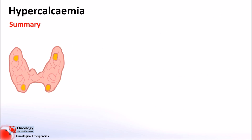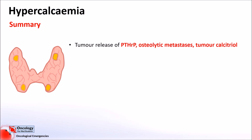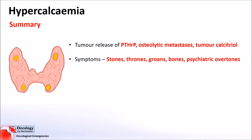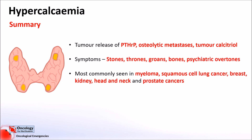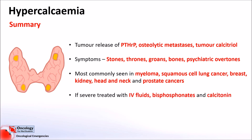In summary, hypercalcaemia of malignancy is most commonly related to tumour release of proteins — most often parathyroid hormone-related protein — but can also be caused by osteolytic metastases and tumour release of calcitriol. Symptoms can be summarised with the rhyme stones, thrones, groans, bones and psychiatric overtones, but don't forget that hypercalcaemia can also have effects on the heart. It's most commonly seen in myeloma, squamous cell lung cancer, breast, kidney, head and neck, and prostate cancers. If very severe, it is treated with IV fluids, bisphosphonates and calcitonin, and in cases that don't respond, haemofiltration.